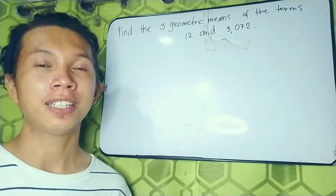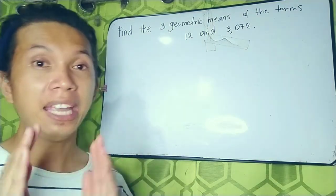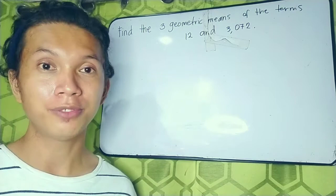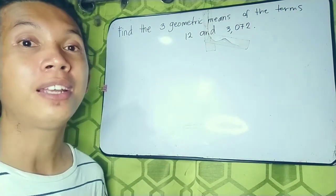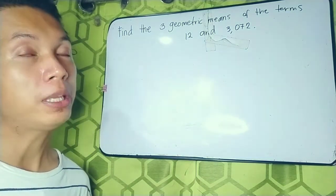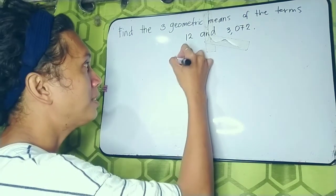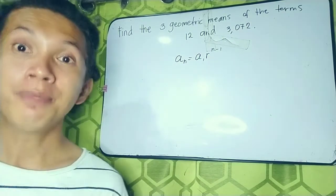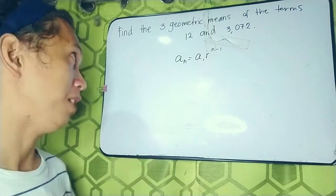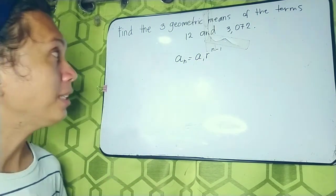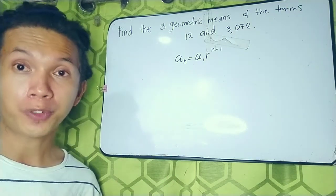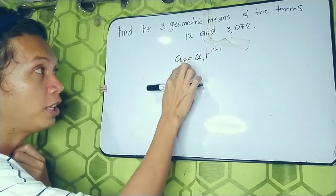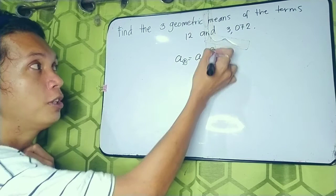To help us learn how to get the geometric means and the common ratio, I have a sample problem: Find the three geometric means of the terms 12 and 3072. First, we need to recall our formula for getting the missing term of a geometric sequence, which is a sub n equals a sub 1 times r to the power of n minus 1. Here, a sub n is our missing or last term, a sub 1 is our first term, r is our common ratio, and n is the position of the missing term.